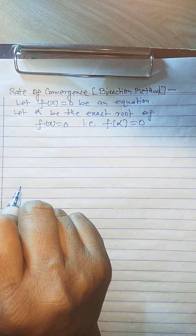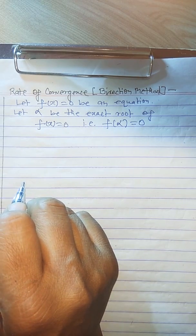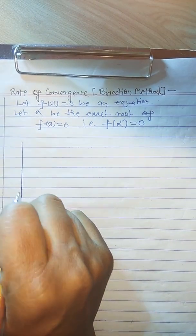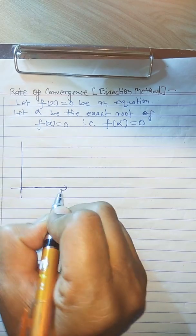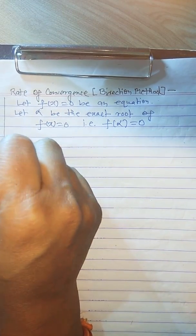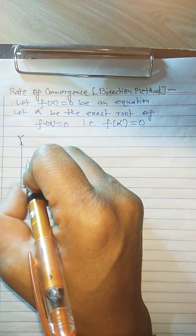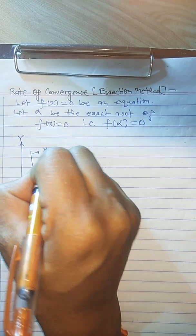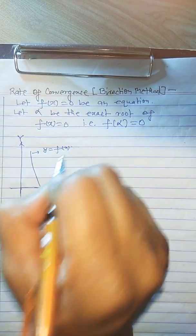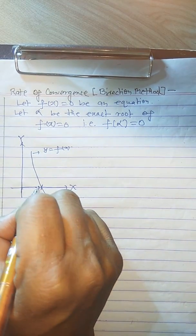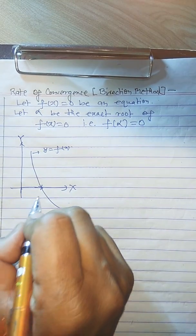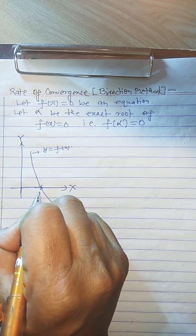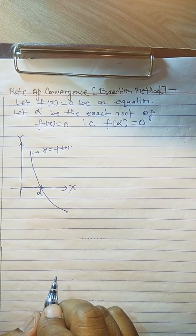Now, how is the bisection method working? Suppose this is the x-axis, this is the y-axis, and suppose this is the given curve y = f(x). When this curve crosses the x-axis, that point is the exact root, and here we assume this exact root is alpha.